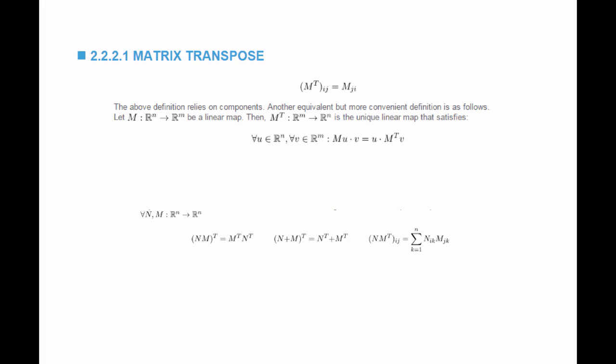Some properties of the transpose of a matrix: if I have two square matrices N and M, both linear maps from R^n to R^n, then (NM) transpose is equal to M-transpose N-transpose — so when I transpose a product I have to switch N and M as well. Also, (N + M) transpose is equal to N-transpose plus M-transpose. And in components, the component ij of (NM) transpose is equal to N_ik M_jk, where k is summed from 1 to n.